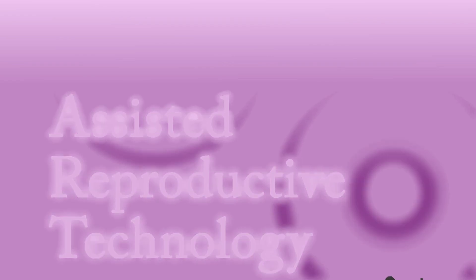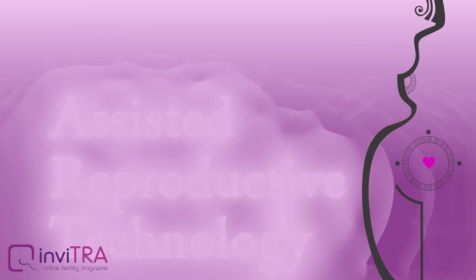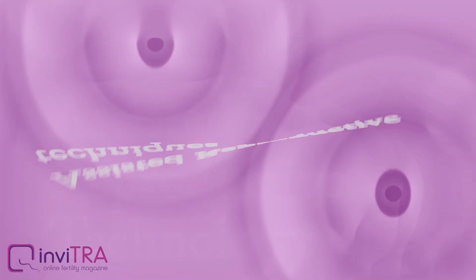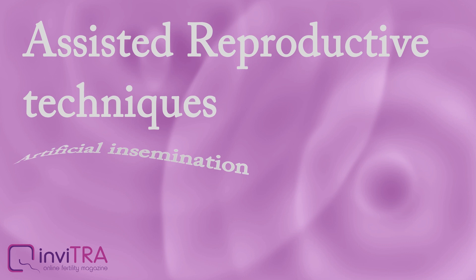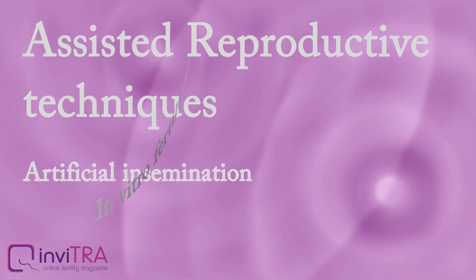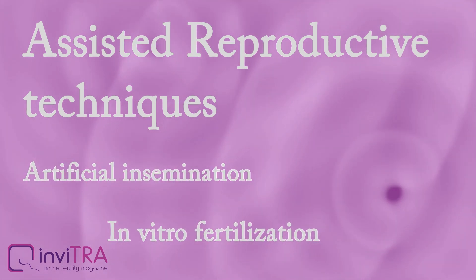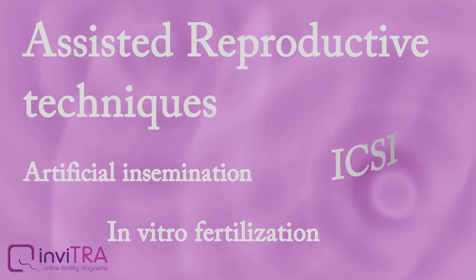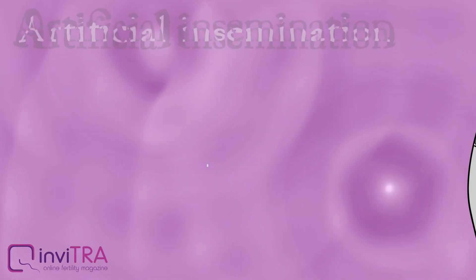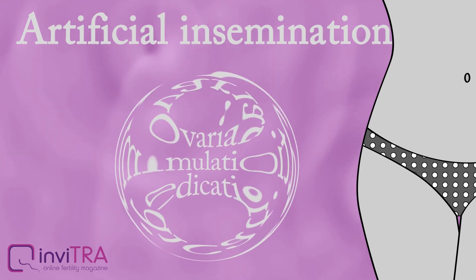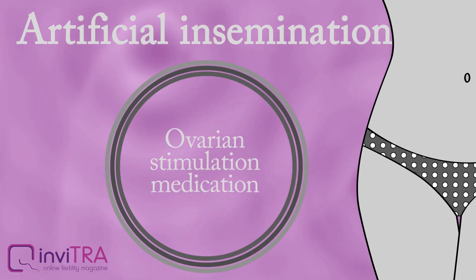Assisted Reproductive Technology stands for the set of techniques that replaces the natural process of reproduction and can be carried out by using different techniques such as artificial insemination, in vitro fertilization, and ICSI or intracytoplasmic sperm injection. Artificial insemination is one of the easiest assisted reproductive techniques.